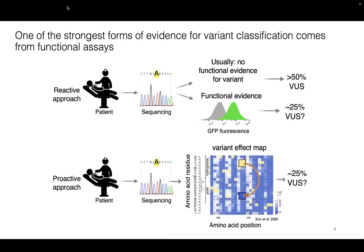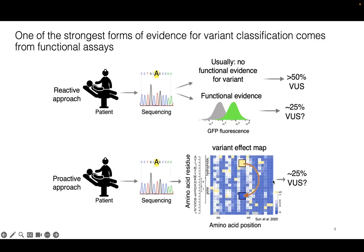Currently when a patient comes to the clinic, in most cases there's no functional evidence for that variant, and the likelihood of returning a variant of uncertain significance classification is really high. If there is some functional evidence for that variant, or some algorithmic evidence which can take months, then the chance of returning a variant of uncertain significance is lowered. What we aim to do in the lab is generate big variant effect maps for disease-associated genes, where the score is indicated by color. Along the protein you have all possible amino acid changes: wild type is in yellow, more deleterious variants are in blue, and more synonymous-like changes are in white. That way we can functionally evaluate all variants before the patient is seen.